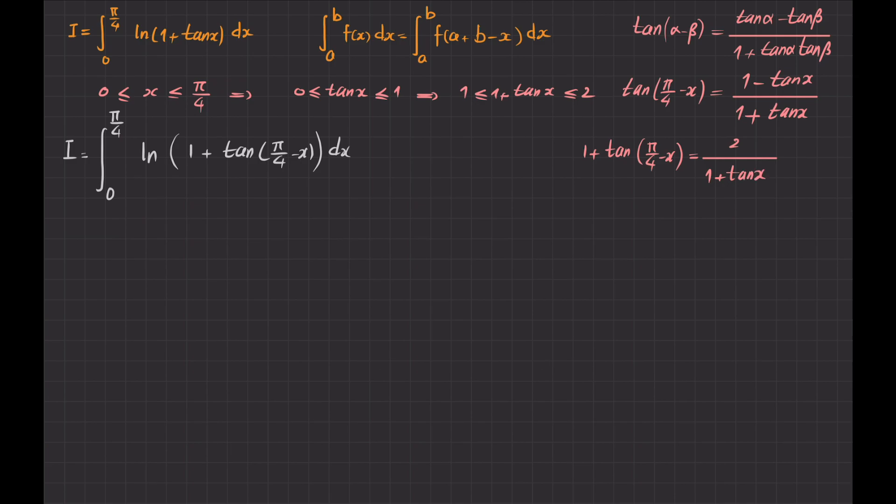And I plug this into my integrand, so it becomes from 0 to π/4, then I will have ln of this fraction, 2/(1 + tan x) dx. But now we know that if a and b are positive, then ln of this fraction a/b can be simply written as ln a - ln b. So 2 is positive, and 1 + tan x in that interval is between 1 and 2, so it is positive. So I am on the safe side to use this formula indeed.